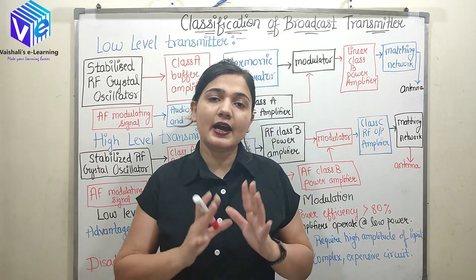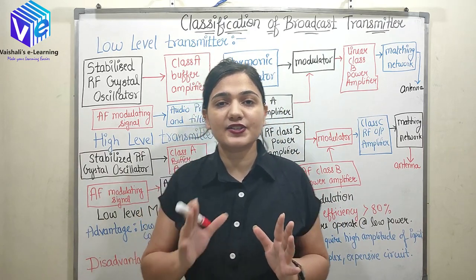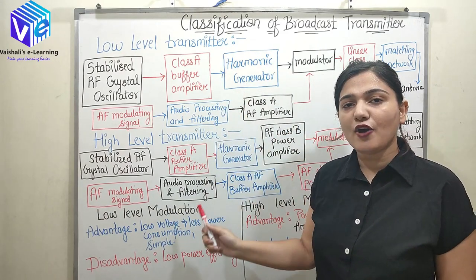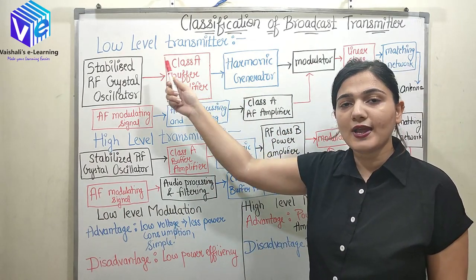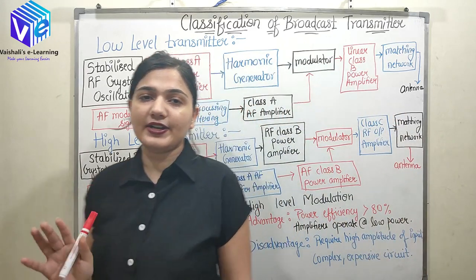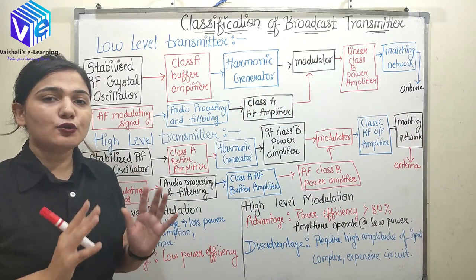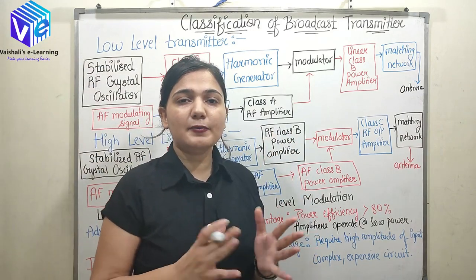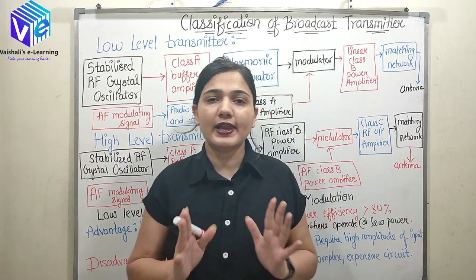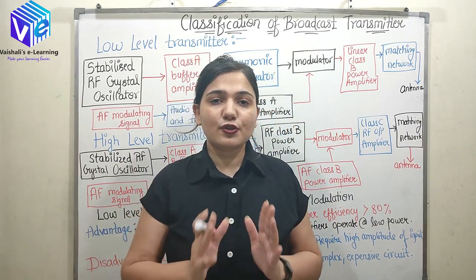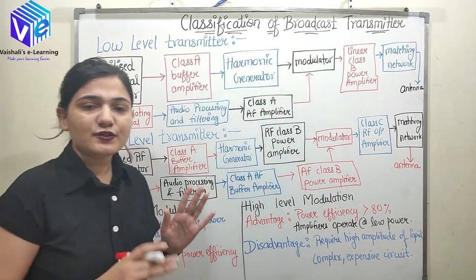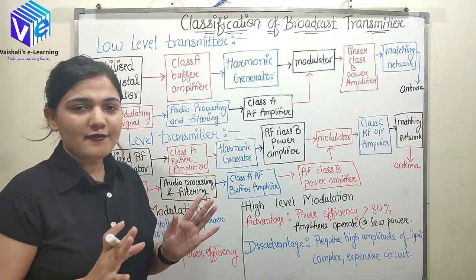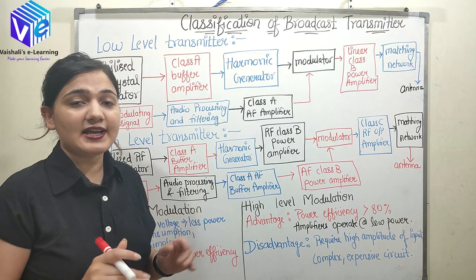Here we are classifying transmitters again, but based upon power level. Now we have two types: the first is low level transmitter and the second is high level transmitter. We are going to talk about their block diagrams, their advantages, and their disadvantages. Stay tuned for more information about both.